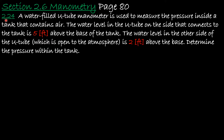It starts from problem 2.24. We are told that we have a water-filled U-tube manometer — the water is the gauge fluid — used to measure the pressure inside a tank that contains air. The water level on the side connected to the tank is 5 feet above the base of the tank. The water level on the other side, open to atmosphere, is 2 feet above the base. Determine the pressure within the tank.